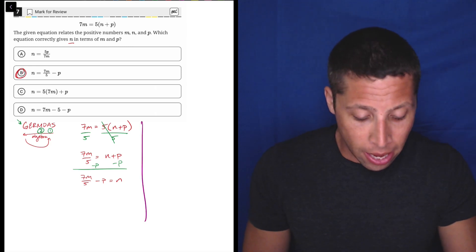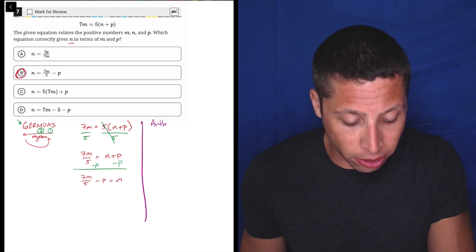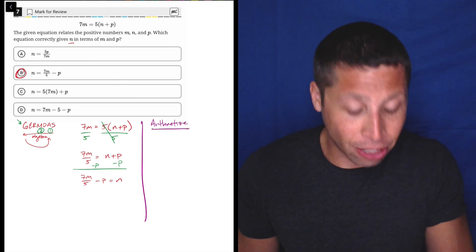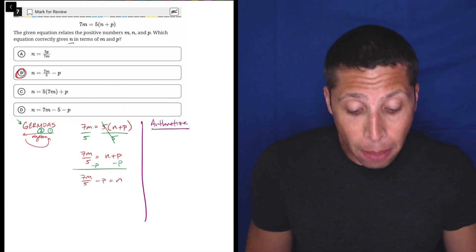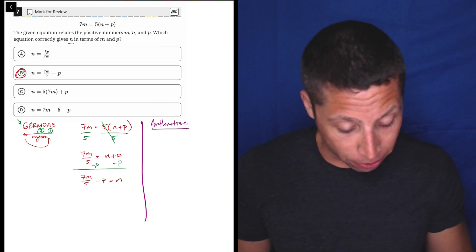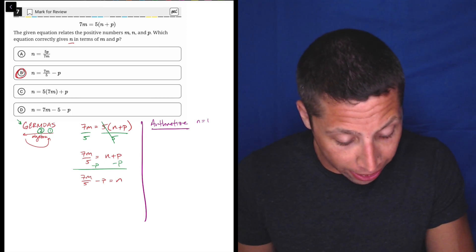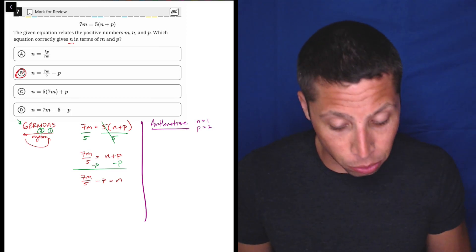We have a calculator, and none of these variables actually matter. So we can make up some numbers for them and just see what happens. So what I would do is just make up, let's say, n is 1, p is 2, just to get some variety.